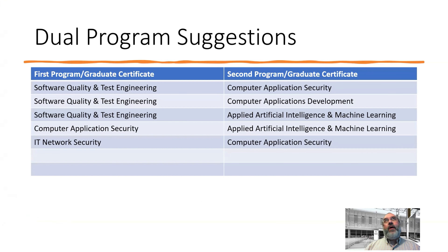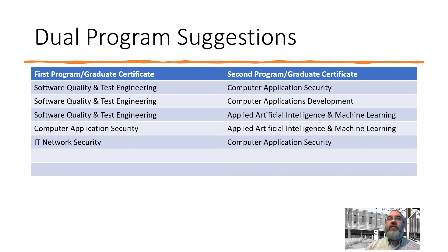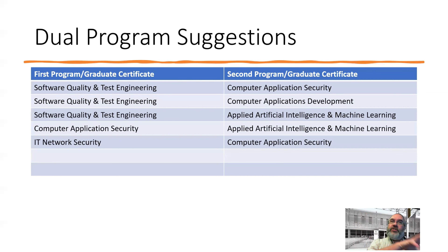When thinking about planning two years of education at Conestoga as you're coming to Canada for the first time, a number of our programs — for instance, software quality assurance and test engineering — are very friendly for someone entering this field. Computer application development is also another friendly graduate certificate for people entering this space. Doing your first graduate certificate in SQATE, as I call it, would set you up for good success in the AI and machine learning program afterwards, so thinking strategically about achieving a strong grounding in that first certificate while planning your second.